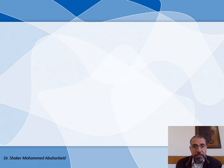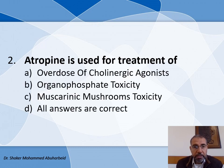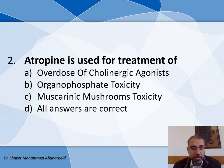The second question: Atropine is used for treatment of — Atropine, as we know, is a cholinergic antagonist and has many therapeutic uses. The answers are: A) Overdose of cholinergic agonists, B) Organophosphate toxicity, C) Muscarinic mushroom toxicity, and D) All answers are correct. As we know, Atropine is used for treating all of these cases, so the answer is D.